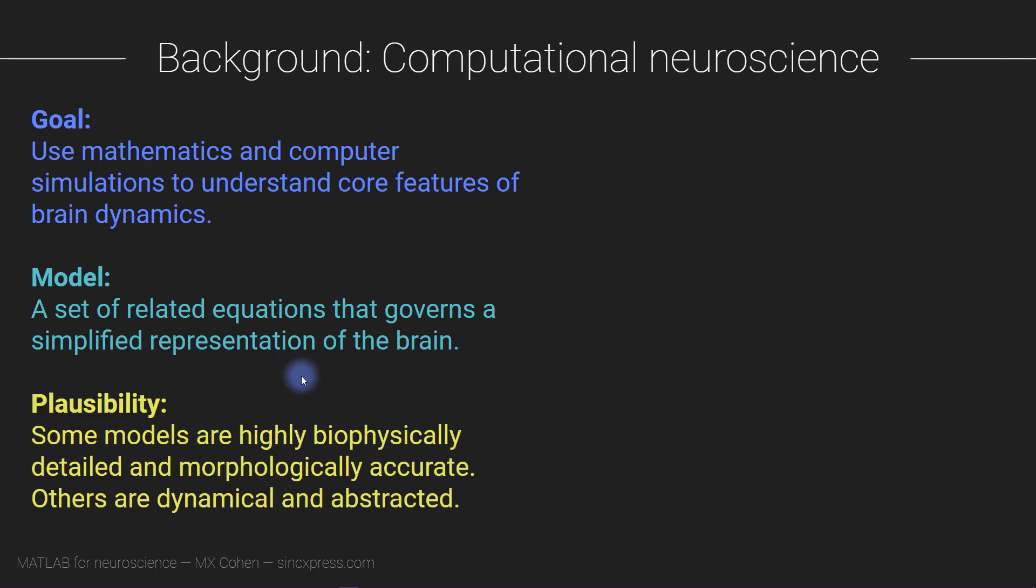All models vary in their level of plausibility. Some models are highly biophysically detailed and morphologically accurate. Other models are more dynamical and abstracted. And these different models have their own sets of advantages and limitations. You wouldn't really say that one level of modeling is necessarily better or worse than another level of modeling. They just have different goals they use to understand the nervous system at different levels.